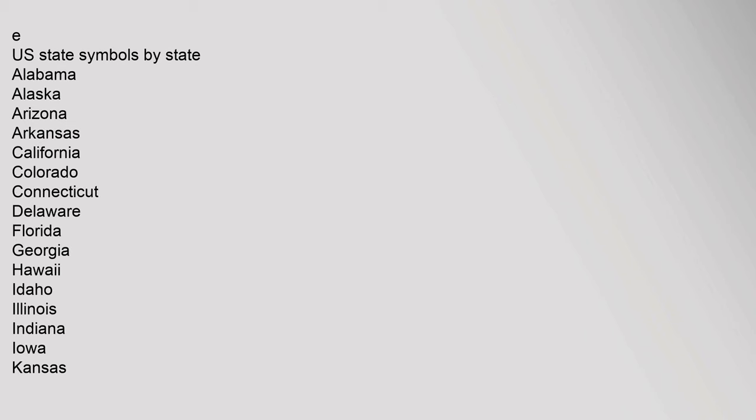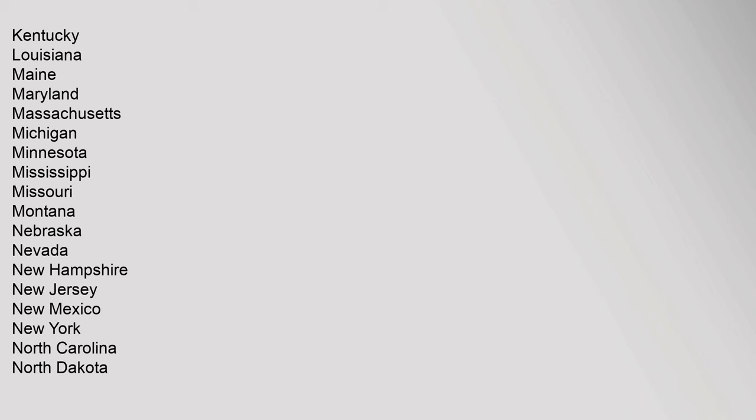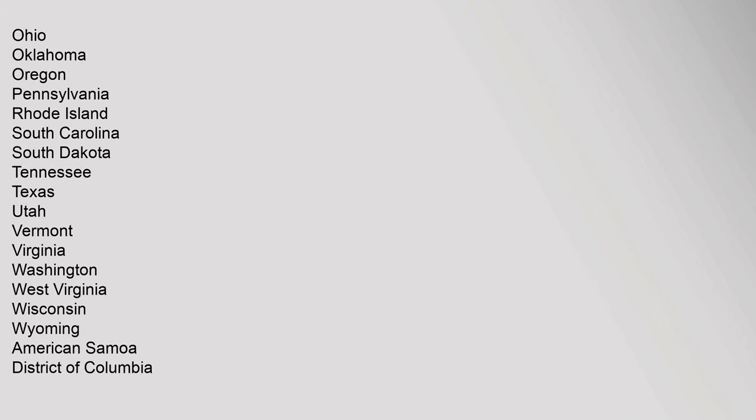U.S. State Symbols by State: Alabama, Alaska, Arizona, Arkansas, California, Colorado, Connecticut, Delaware, Florida, Georgia, Hawaii, Idaho, Illinois, Indiana, Iowa, Kansas, Kentucky, Louisiana, Maine, Maryland, Massachusetts, Michigan, Minnesota, Mississippi, Missouri, Montana, Nebraska, Nevada, New Hampshire, New Jersey, New Mexico, New York, North Carolina, North Dakota, Ohio, Oklahoma, Oregon, Pennsylvania, Rhode Island, South Carolina, South Dakota, Tennessee, Texas, Utah, Vermont, Virginia, Washington, West Virginia, Wisconsin, Wyoming, American Samoa, District of Columbia, Guam, Northern Mariana Islands, Puerto Rico, U.S. Virgin Islands. State, District, and Territorial Insignia. United States National Symbols.